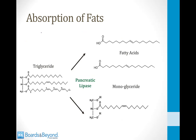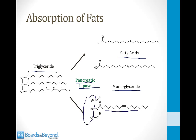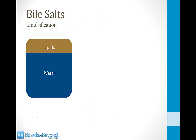The way we absorb the triglycerides we consume into the bloodstream is by breaking them down using an enzyme called pancreatic lipase, which is secreted by the pancreas. What pancreatic lipase does is break down triglycerides into fatty acids and monoglycerides. A monoglyceride is a glycerol molecule attached to only one fatty acid; when it's attached to three fatty acids it's called a triglyceride.